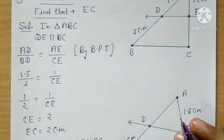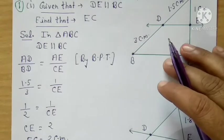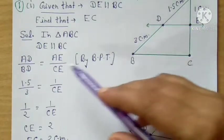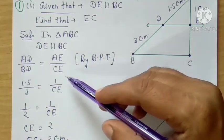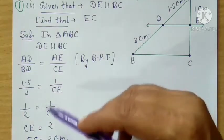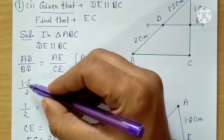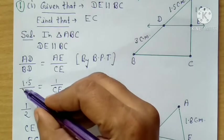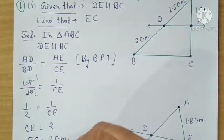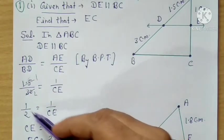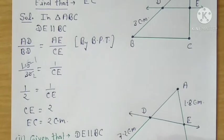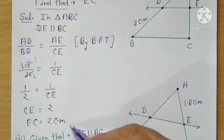Now put in the values that are known. AD is 1.5, put BD's value, put AE's value, and EC we have to find. Cross multiply — or before that, you can simplify the decimals: multiply by 10, so 1.5 becomes 15, and 15 into 2 gives 30, divided by 3 gives 2. So CE equals 2 centimeters.